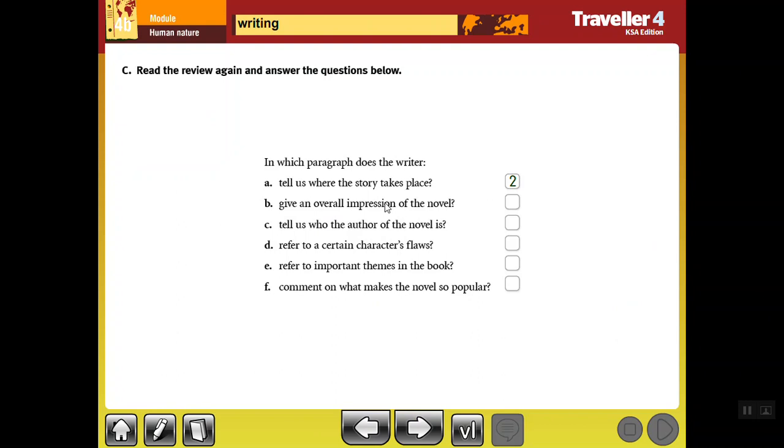B: Give an overall impression of the book. If you want to give an impression of the novel, where would you write that impression? In the introduction or in paragraph one, body paragraph two, or in the conclusion? Exactly, in paragraph four which is the conclusion. You need to write your impression - if you liked the book in general or you didn't like it. The third question: In which paragraph does the writer tell us who the author of the novel is? Exactly, you need to mention the name of the author in the very first paragraph which is the introduction. That's paragraph one.